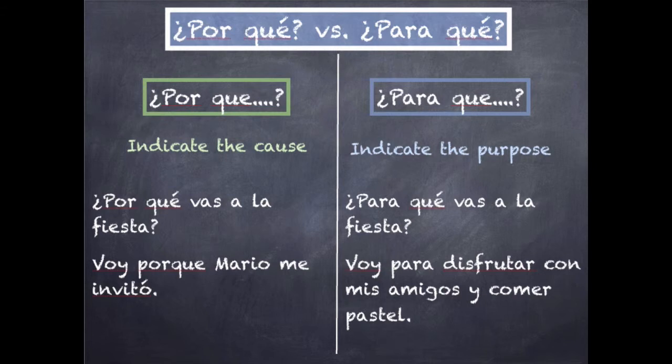Now look at the difference with 'para qué.' 'Para qué' is about the finalization — it's the reason that something is happening, specifically what's going to happen as the reason for going. '¿Para qué vas a la fiesta?' When you answer it, you explain the things you're going to do at the party that are the reason why you're going. 'Voy para disfrutar con mis amigos y comer pastel' — I'm going in order to enjoy time with my friends and eat cake.